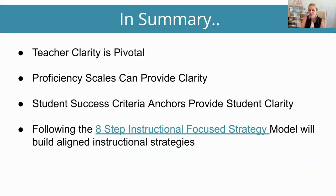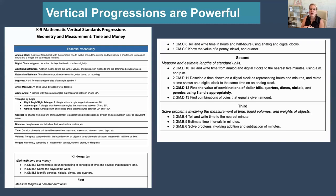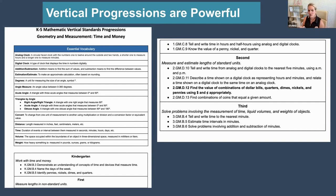In summary: teacher clarity is pivotal — we have to know our standards and what the state says is proficient. Proficiency scales can provide that clarity, and student success criteria and anchor charts can provide the student clarity where we break it up. Following this process can be really helpful for teachers seeing how to merge those together and come up with specific strategies. I also want to close with the power of vertical progressions. Looking at a K–2 progression on time and money: the bolded priority standard shows up nowhere in kindergarten; first grade is priority and it hits in second grade.